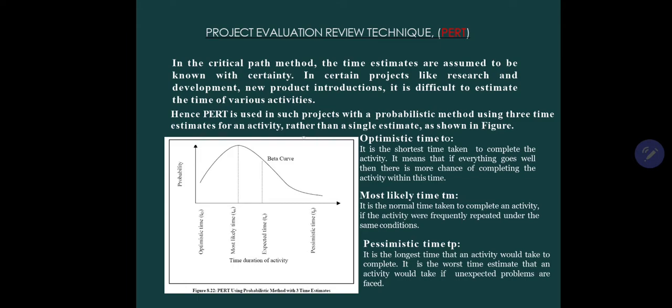So PERT is used in such projects with a probabilistic method using three time estimates for an activity rather than a single estimate. Here in the figure you can see, one more thing you have to remember, PERT is based on the beta curve. We have drawn this curve from probability. This one is the optimistic time, most likely time, expected time, and pessimistic time.